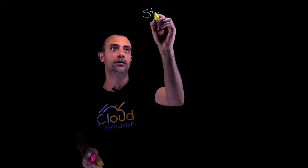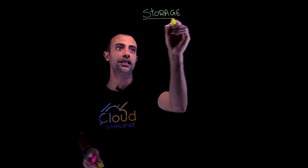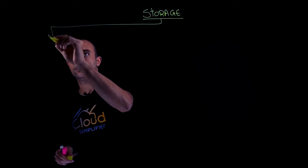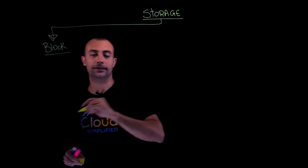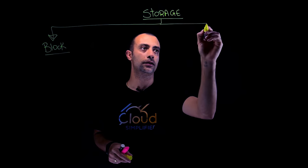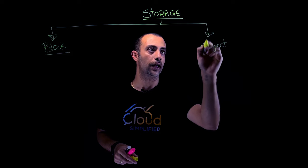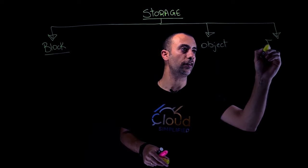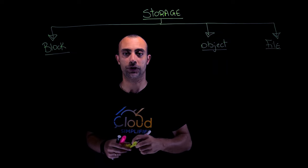In general, I can divide storage into three options or three families. The first family is called block storage, the second family is called object storage, and the third family is called file storage. So let's explore the options between the three.